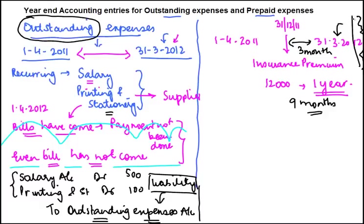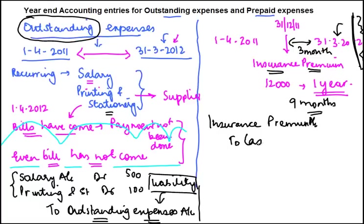When you follow the accrual basis of accounting, it requires that expenses pertaining only up to that date be booked. Originally when you paid the premium, the entry is: debit insurance premium account, credit cash — 12,000. If you don't pass any further entry, this 12,000 will hit the profit and loss account, which is incorrect.